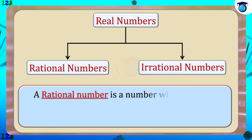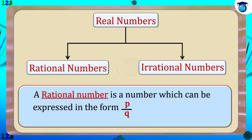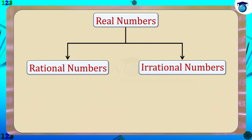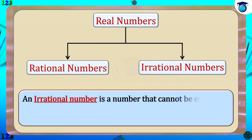A rational number is a number which can be expressed in the form p by q, where p and q are integers and q is not equal to zero. While an irrational number is a number that cannot be expressed in the form p by q for any integers p and q, where q is not equal to zero.